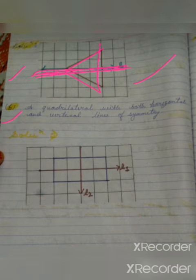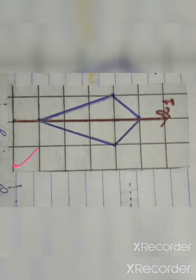Now comes Part B: a quadrilateral with both horizontal and vertical lines of symmetry — horizontal and vertical both. We will make a rectangle. Look at this diagram and draw it. Part C is a quadrilateral with a horizontal line of symmetry but no vertical line of symmetry. In this figure, the line of symmetry is horizontal and no vertical line of symmetry is found.